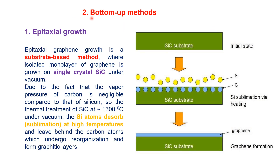The second approach for graphene synthesis is the bottom-up method, where we start from atomic carbon and build graphene. This includes epitaxial growth — a substrate-based method where an isolated monolayer of graphene is grown on a single crystal silicon carbide substrate under vacuum. When the silicon carbide substrate is heated to 1300°C, silicon atoms desorb by sublimation and leave the substrate, while carbon atoms remain. These carbon atoms then undergo reorganization to produce a graphene layer on the substrate.